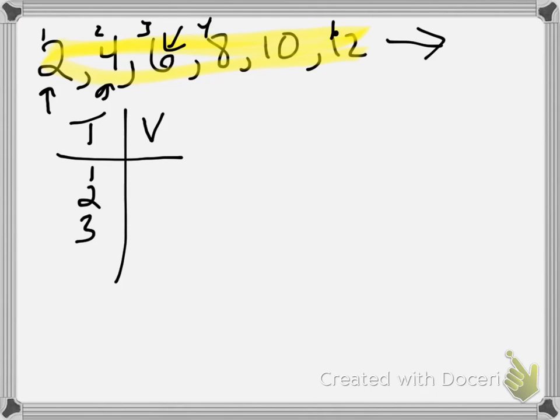And then that pattern can keep going all the way up to term 10 or all the way up even higher to term 100, whatever it is. So the term number is always going to go under the T side.